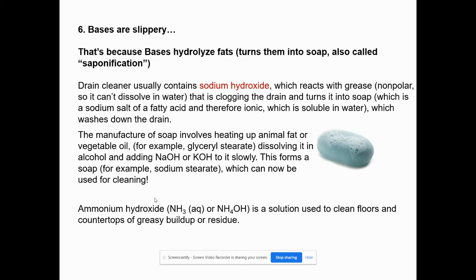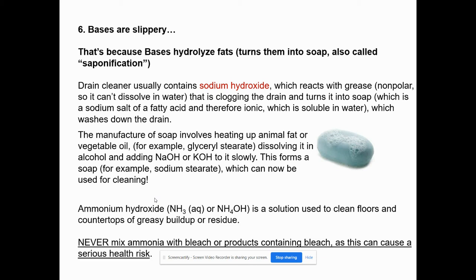Drain cleaner contains sodium hydroxide. So if you ever worked in a diner or a restaurant, you'd probably be using a lot of this stuff because the greasers get all clogged up. It's pretty nasty. But it'll break down the fats. Also, aluminum hydroxide is used to clean floors and countertops, especially when they get greasy. Never ever mix ammonia with bleach or products containing bleach. It gives off a highly toxic gas that will kill you.